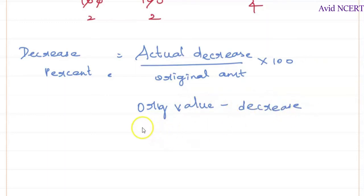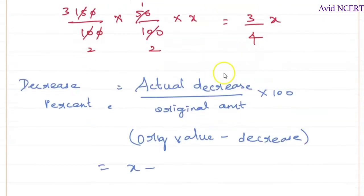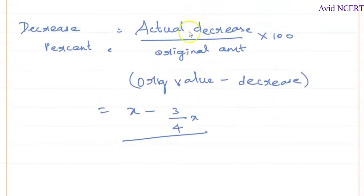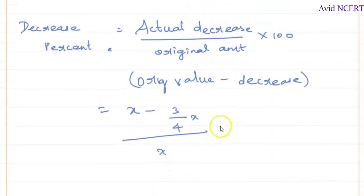So which is original value is x here minus decreased value is 3 by 4 x divided by the original amount here is x times 100.